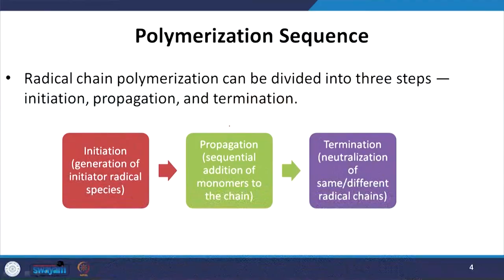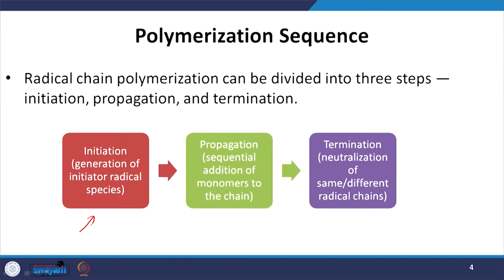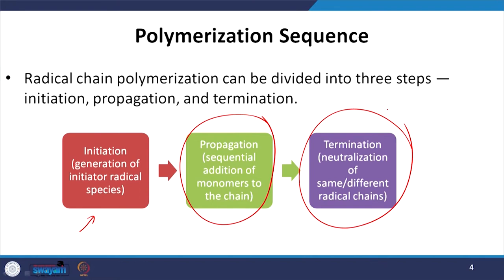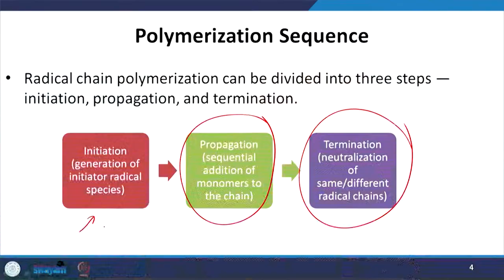Let us start with this polymerization sequence. Radical chain polymerization can be divided into three steps. First, initiation — the generation of initiator radical species, maybe with the help of a functional group or other external approaches. Second, propagation — the sequential addition of monomer to the chain depending on the protocol followed. Third, termination — various approaches including neutralization or killing of radical chains. These three steps are an integral part of radical chain polymerization.